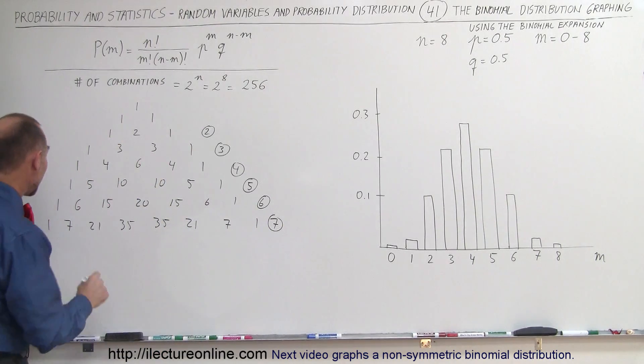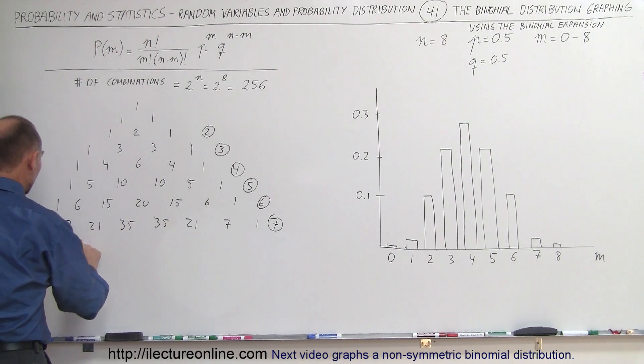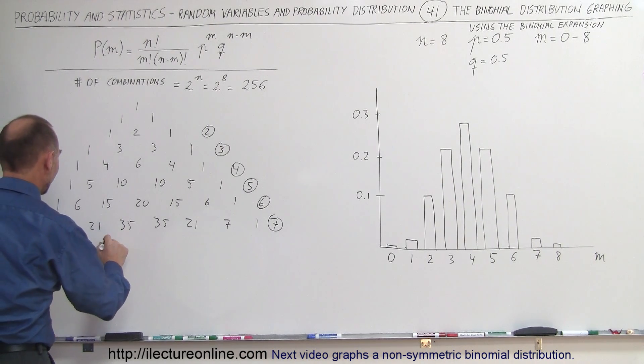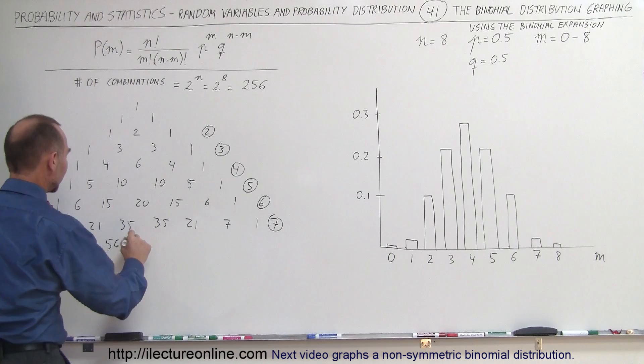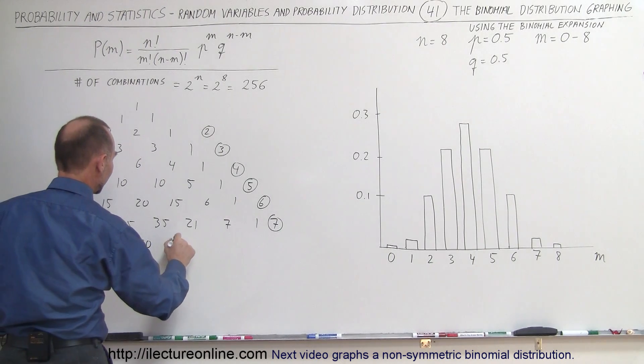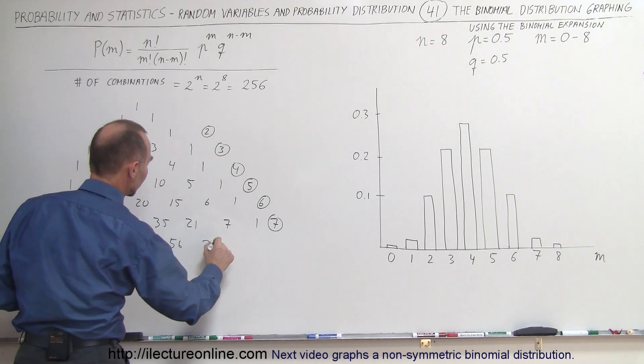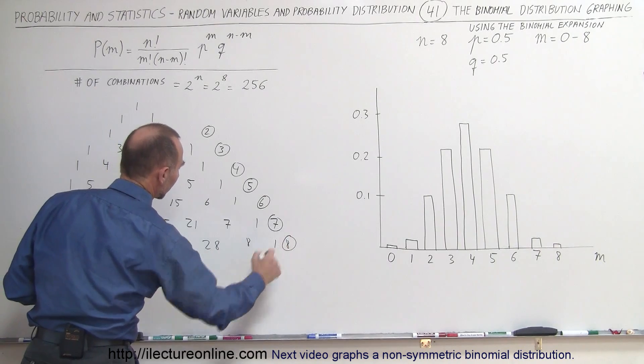And finally the last row we get 1, 8. That would be 28. That would be 56. That would be 70, 56. That would be 28, 8, and 1. That would be for the 8th row.